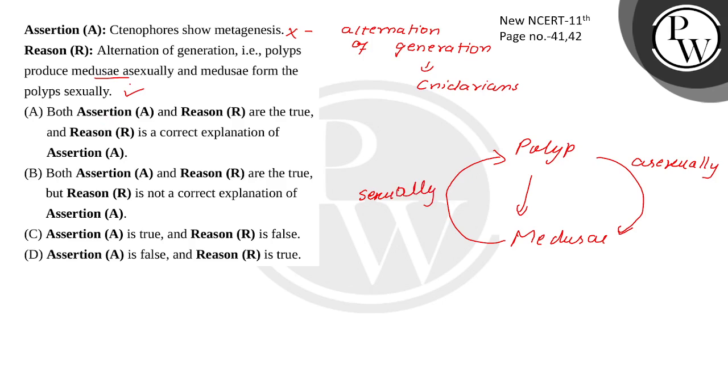This statement is correct. Assertion is false and reason is true. Reason is the correct explanation of assertion? Incorrect. Both assertion and reason are true, but reason is not a correct explanation of assertion? Incorrect. Assertion is true and reason is false? No. Assertion is false, reason is true - option D is correct.